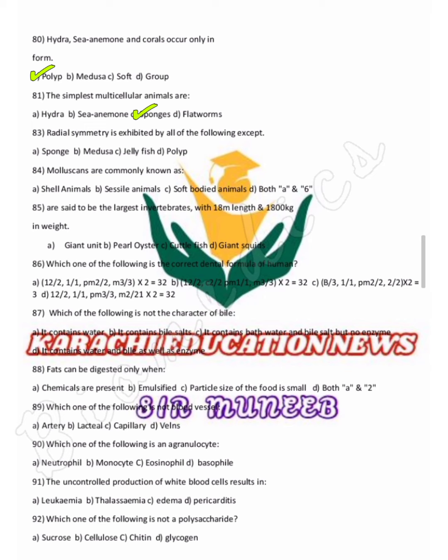Radial symmetry is exhibited by all of the following except — you should remember two phyla: Cnidaria and Echinoderms. Cnidarian body forms include medusa and polyp, for example jellyfish. Sponges would be the exception option since they do not show radial symmetry.